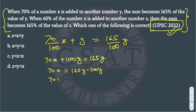So it will become 70x is equal to 65y. Now we will write it as x upon y is equal to 65 upon 70. Now we can divide this number by 5, so it will be 13 by 14.